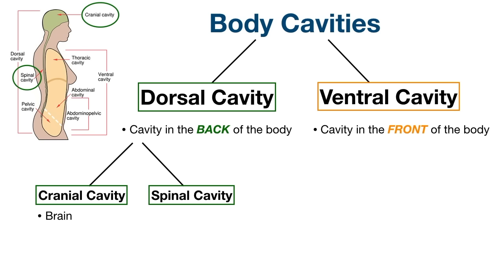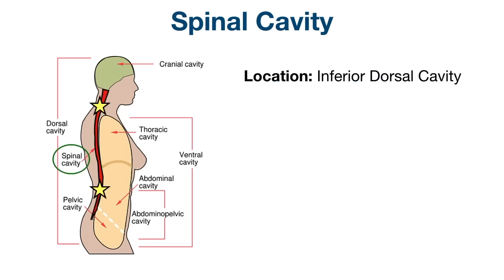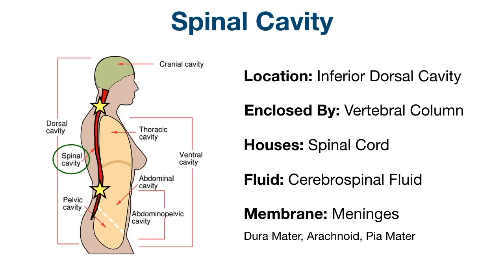Going back to the flow chart, we now have a good understanding of the cranial cavity and how it contains the brain. Now let's look at the spinal cavity. The spinal cavity is also known as the vertebral cavity, and it's the inferior portion of the dorsal cavity. The spinal cavity is continuous with the cranial cavity and is enclosed by the vertebral column or spine. It houses the spinal cord and also contains cerebrospinal fluid. The meninges line the spinal cavity just like the cranial cavity.